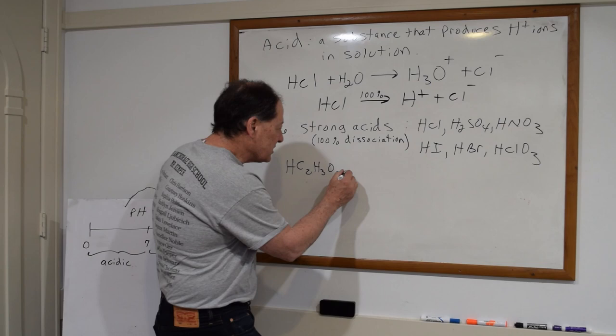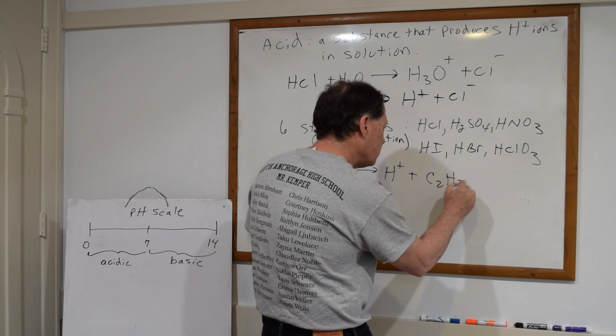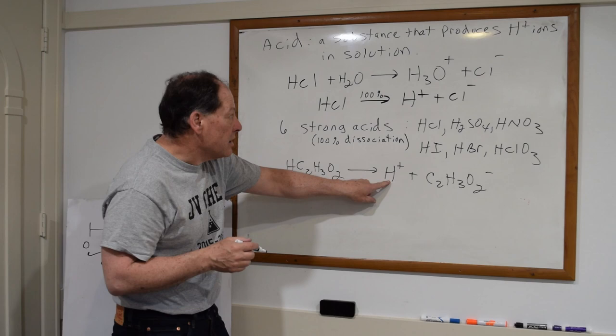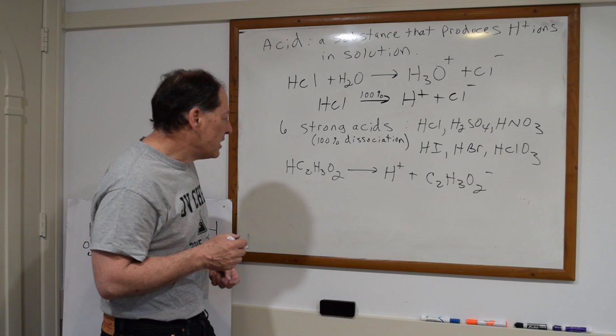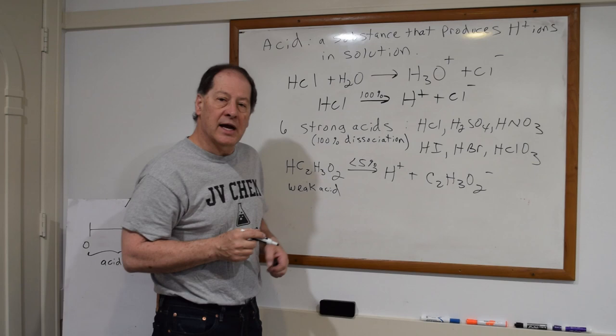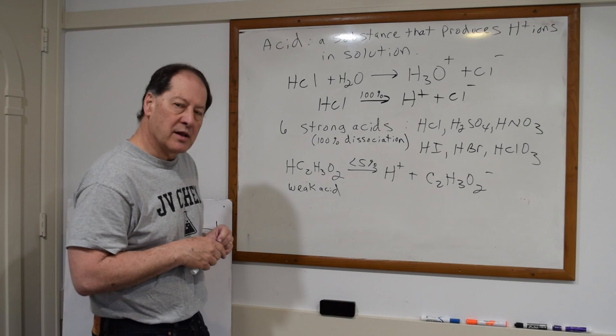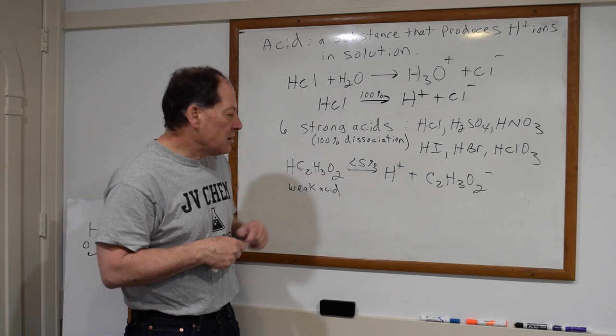Vinegar is a weak acid, so that hydrogen is going to pop off, and what's left is going to be the acetate ion. We could also write it with that hydrogen ion attached to a water molecule to form hydronium, but the shorter form is easier. A weak acid means less than 5% of those molecules break apart into hydrogen ions and the negative ion. It could be as high as 50%, but most weak acids are 5% or less.